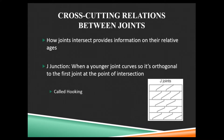A good example: the J-joints. In this case, the little short ones that are at an angle are always, always younger than the long through-going cracks. We know that because those joints that are at an angle curve to end up perpendicular to those long joints. They also don't go past those long joints — they stop at them.